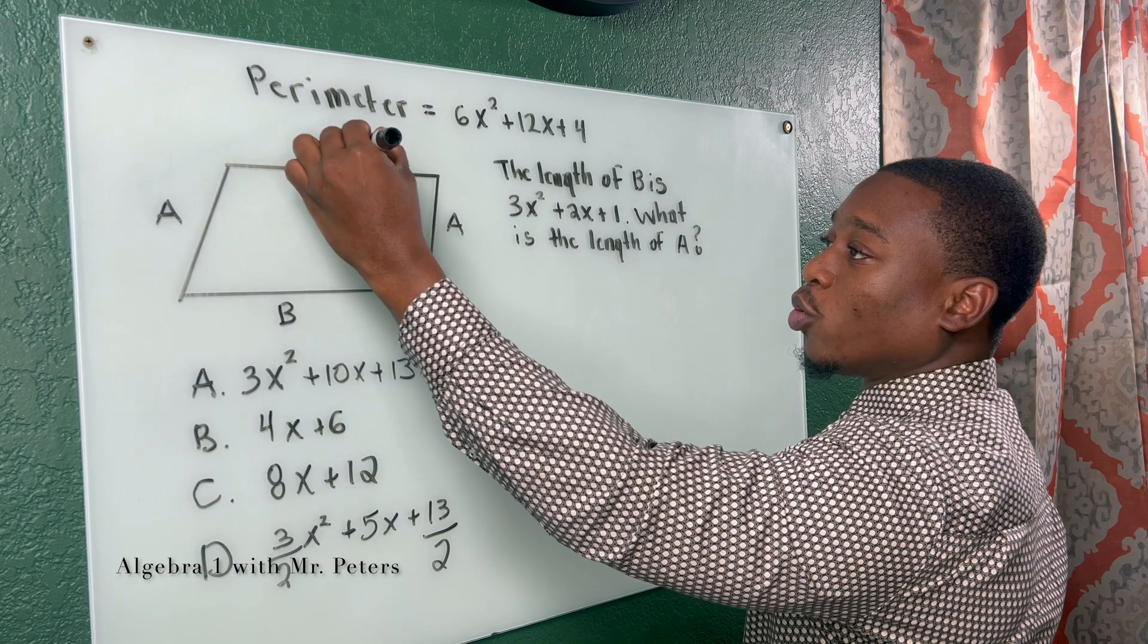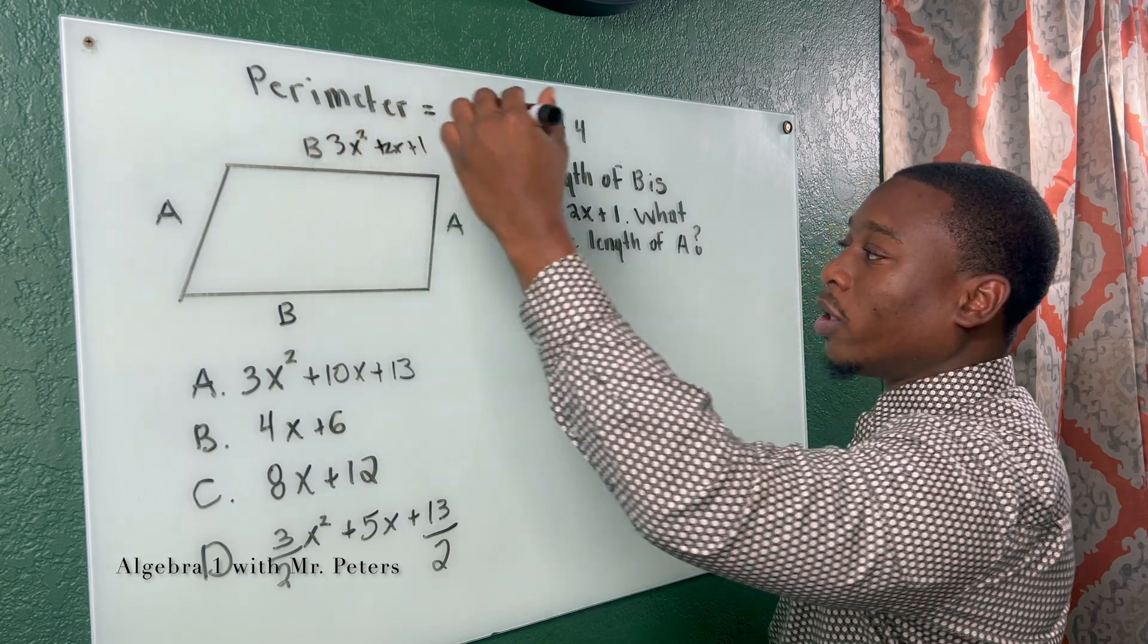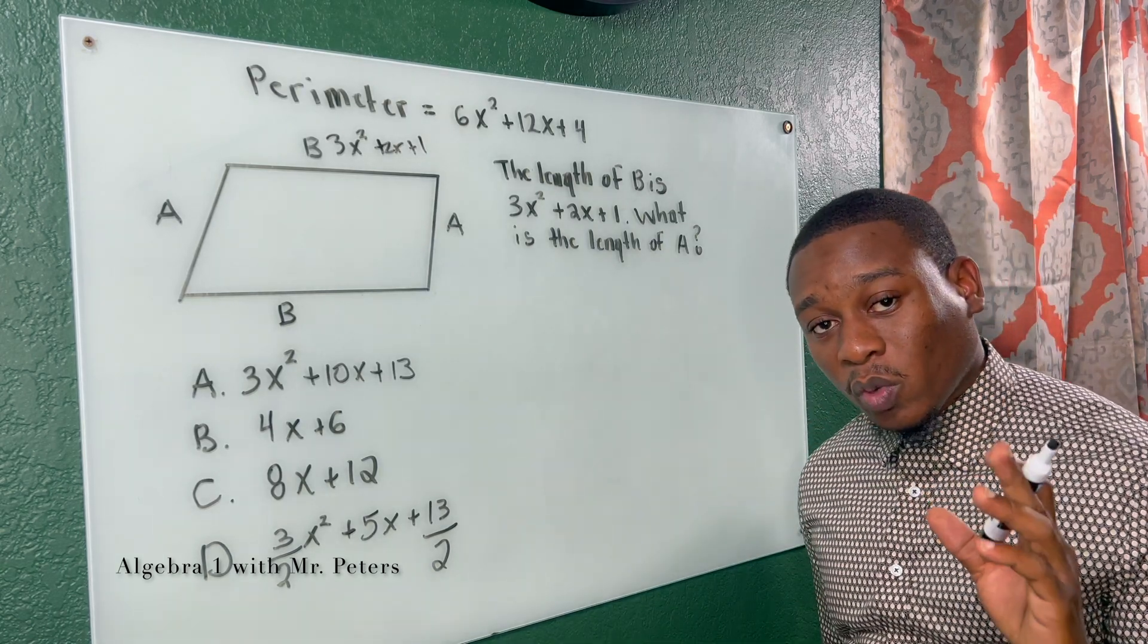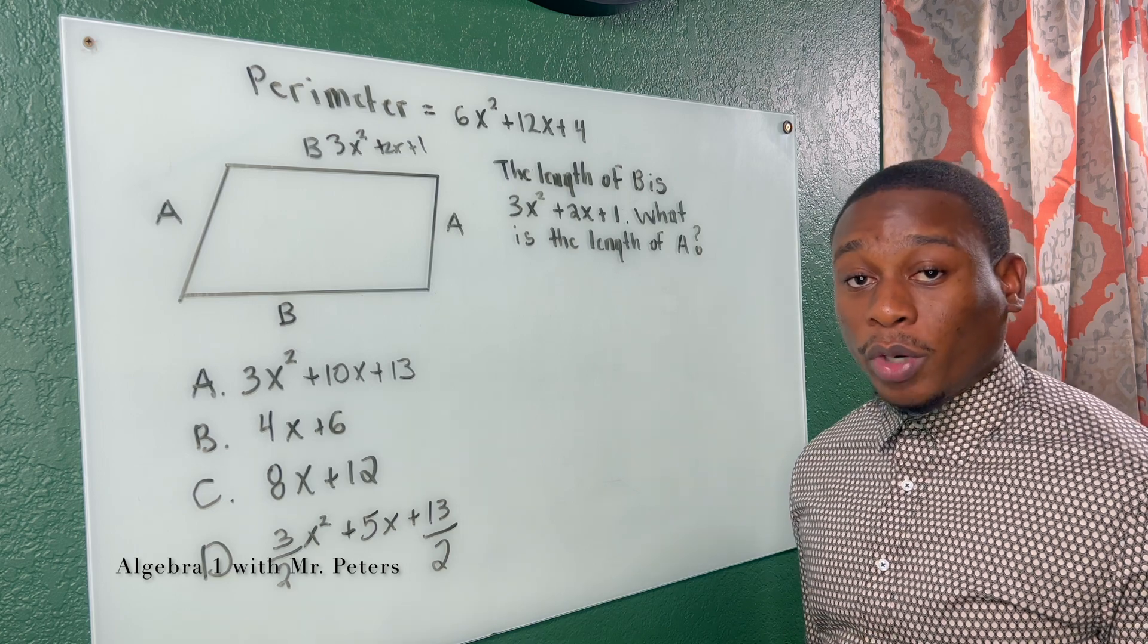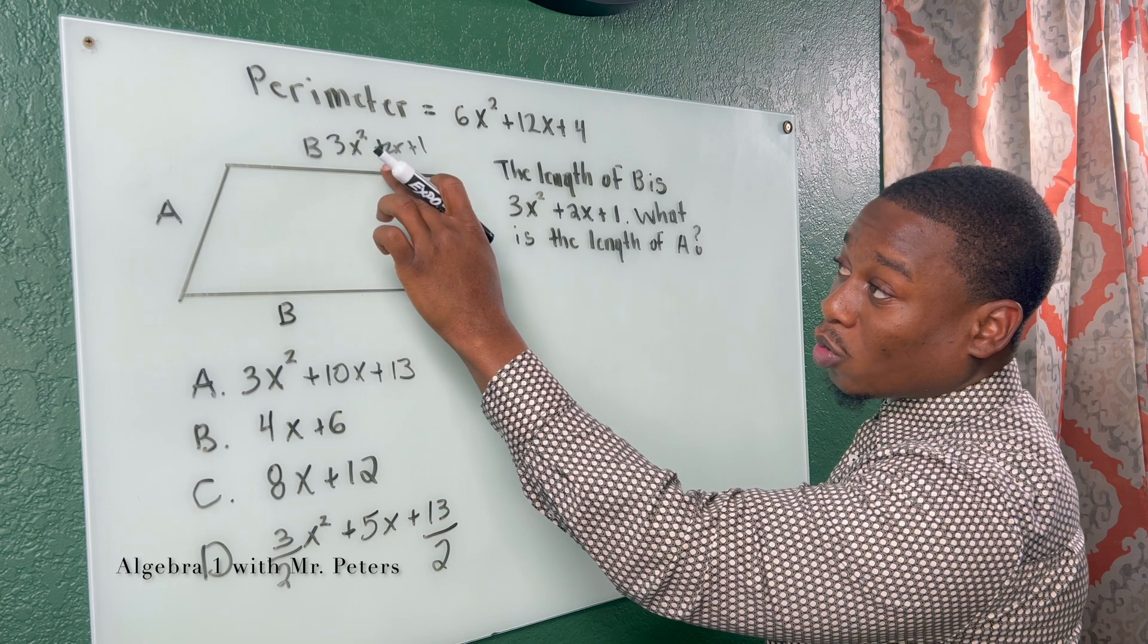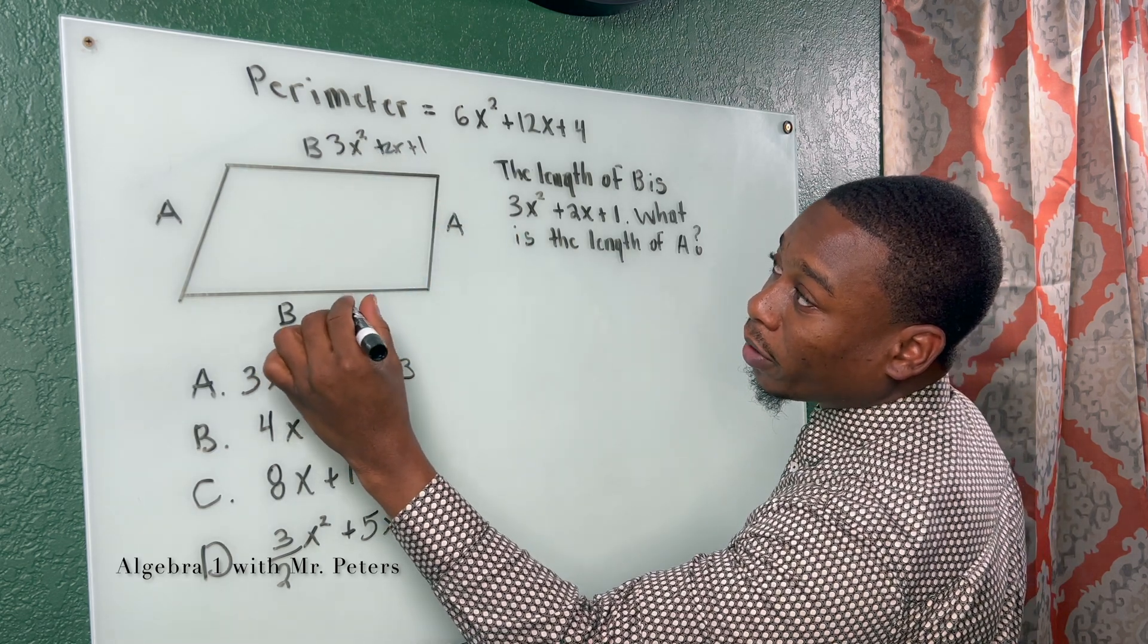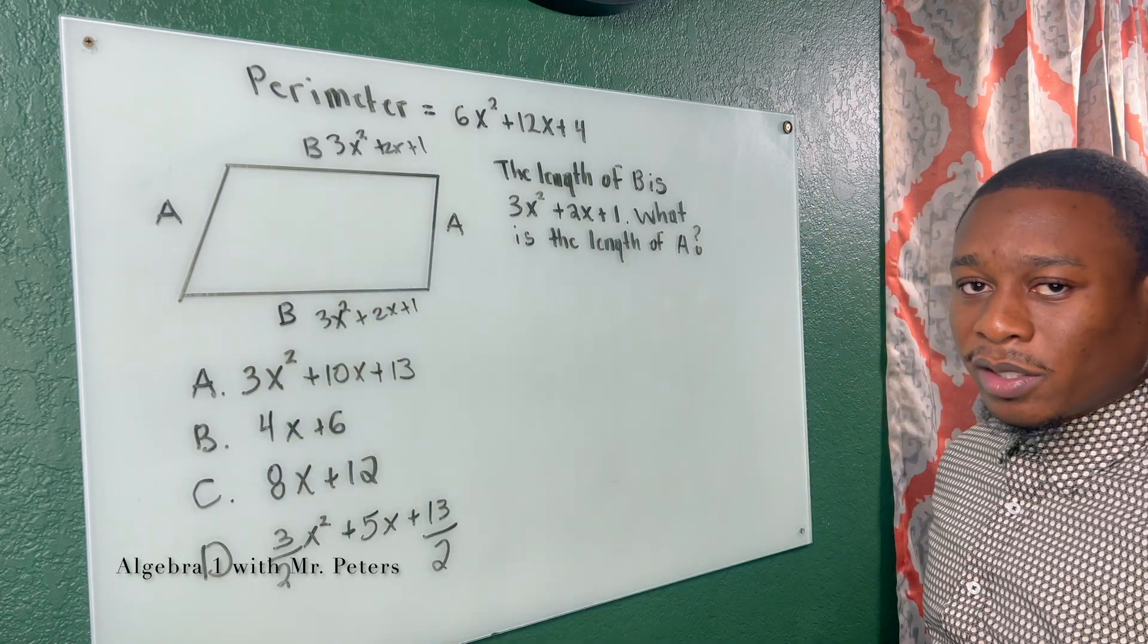Then they tell us the length of B is 3x² + 2x + 1. So let's just write that. I'm visual. 3x² + 2x + 1. Now they're asking us for A. Now the biggest reason why students get this wrong is because they just don't understand the concept of congruent sides. Meaning, if this B is 3x² + 2x + 1, so is this side.